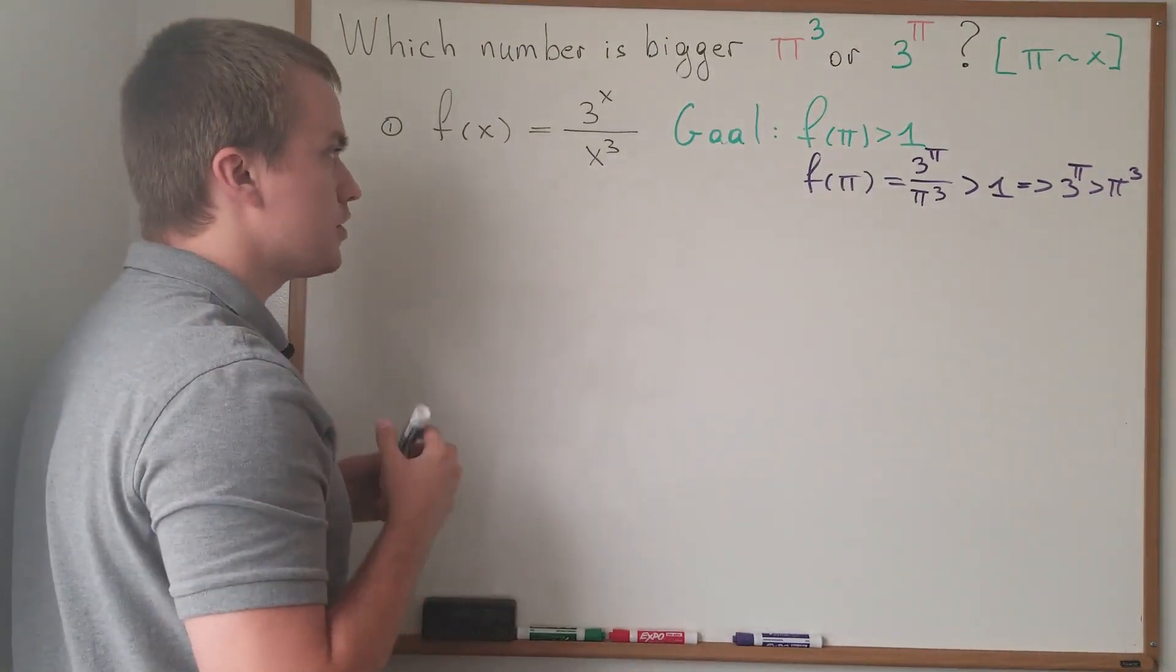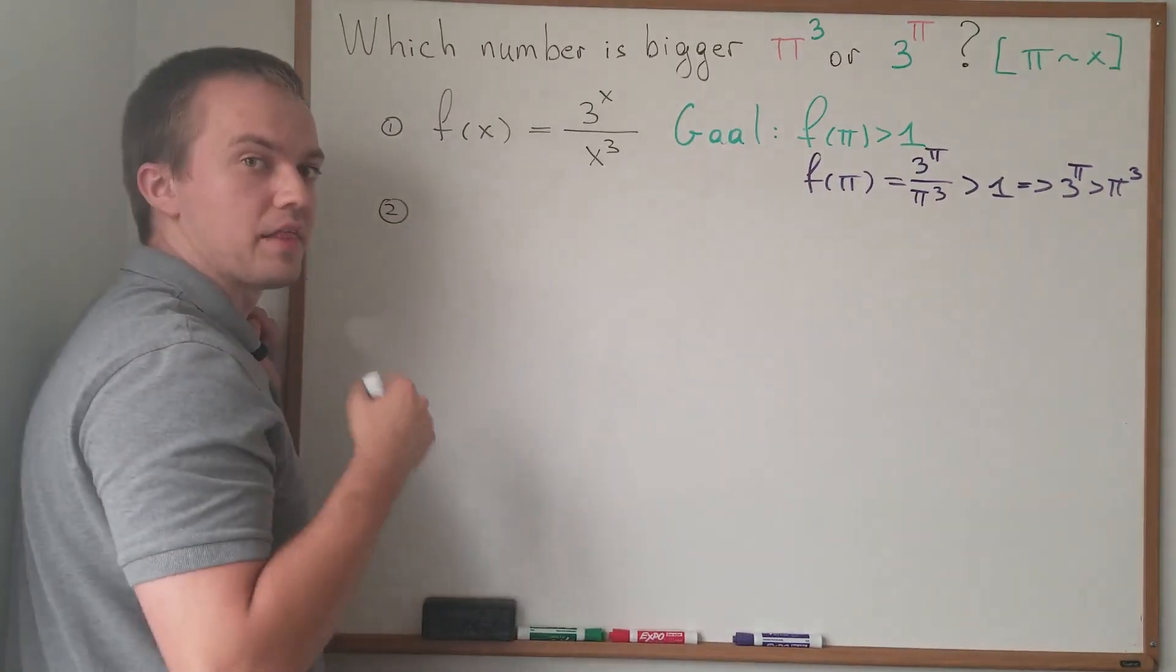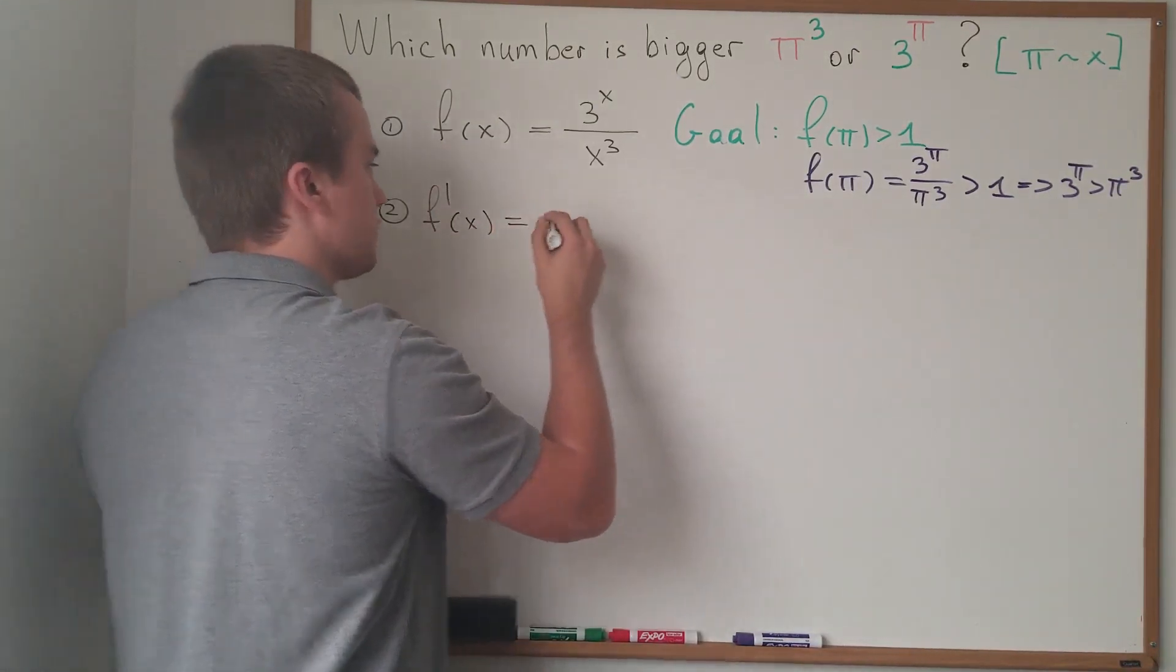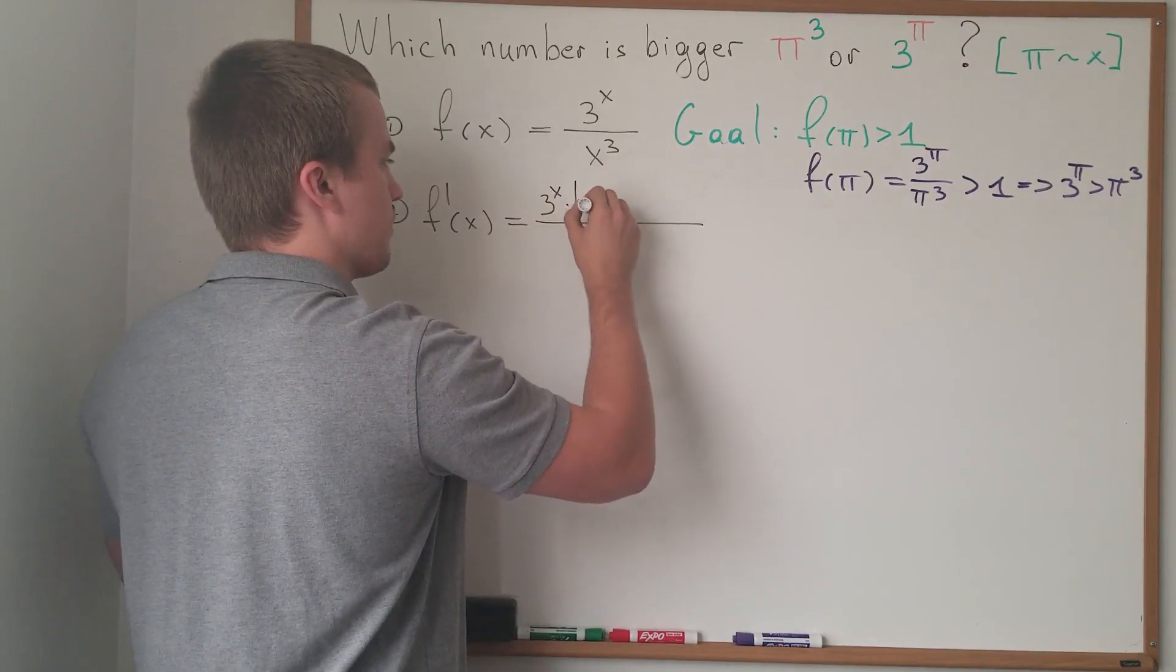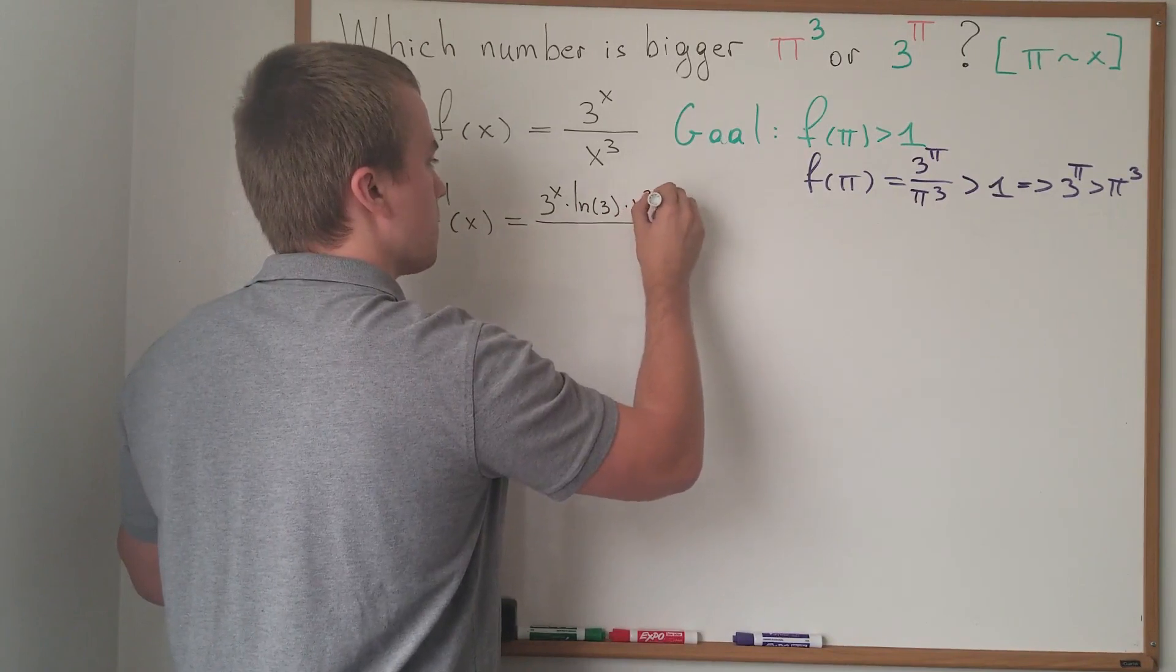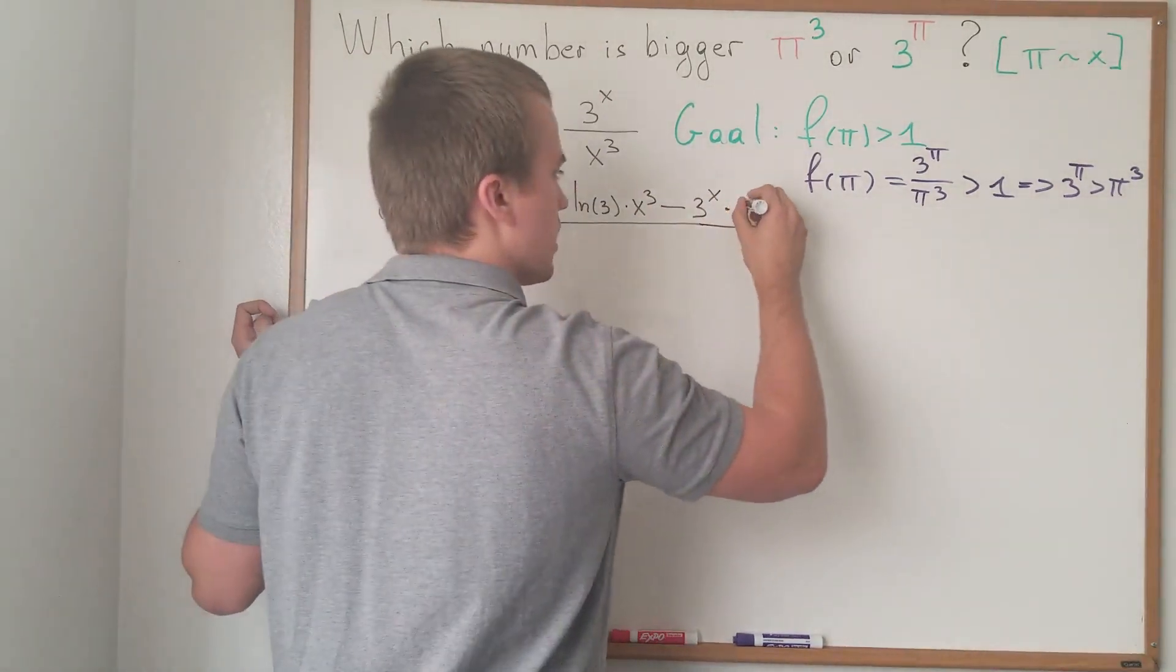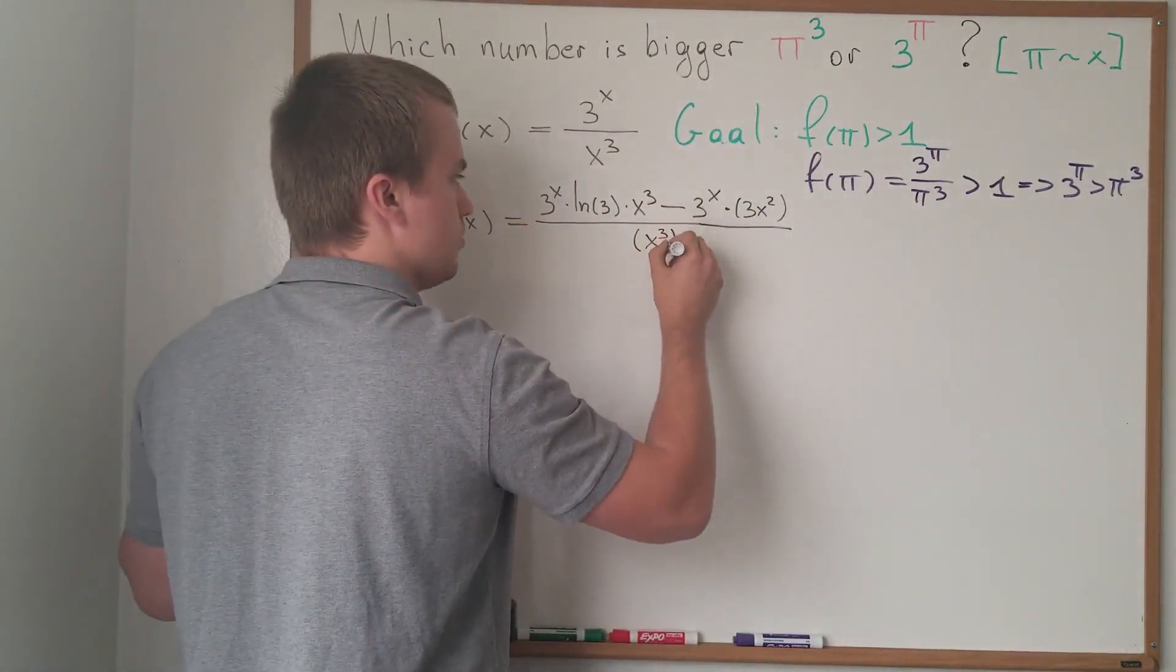So, let's actually prove that f(π) is bigger than 1. What should I do first? Let's find our critical points for our function. And let's answer where my function increases or where my function decreases. So, what is my f'(x)? f'(x), by using quotient rule, is 3 to the power of x times ln(3) times x cubed, minus 3 to the power of x times derivative of x cubed, which is 3x squared. And then we're going to square the bottom. So, we're going to have x cubed squared.